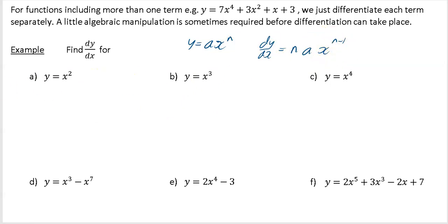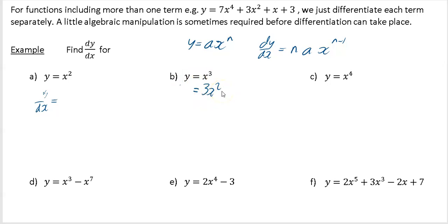Always write down dy by dx — a big thing people do wrong is not writing it. If you just write x cubed equals 3x squared that is nonsense, because you're saying x cubed is the same as 3x squared. To be correct you must write dy by dx equals 3x squared. For part a, y equals x squared: dy by dx equals 2 times x to the power 1, which is just 2x.